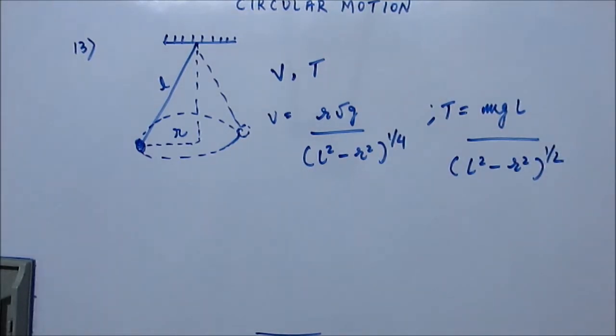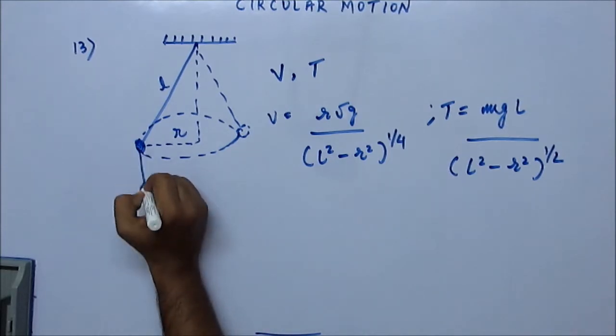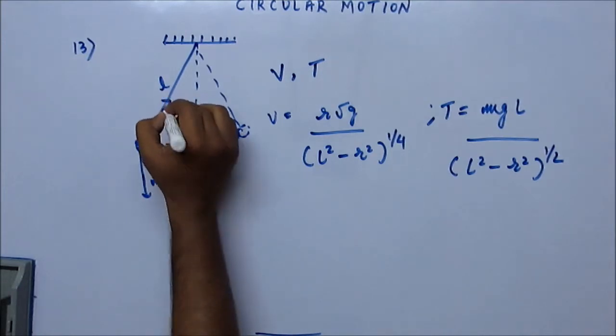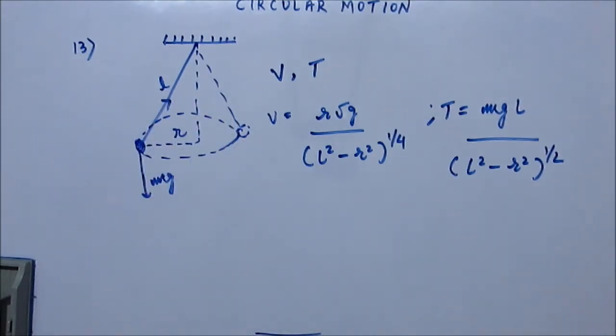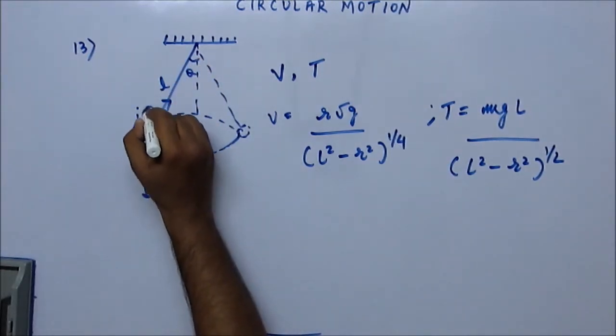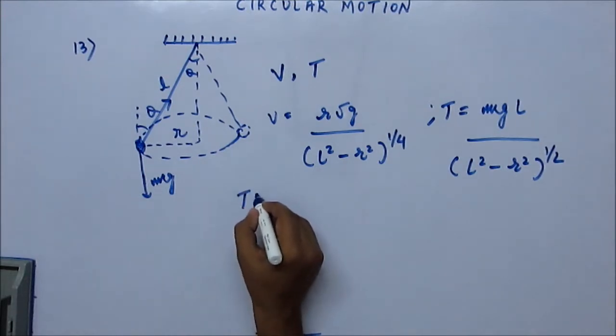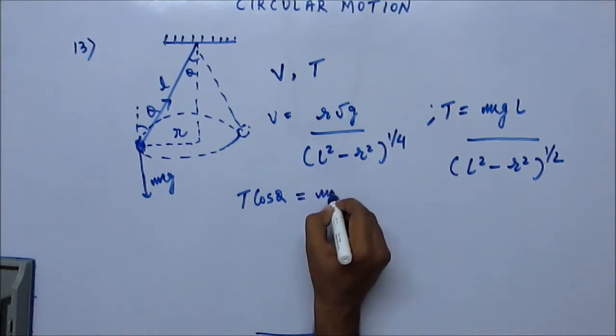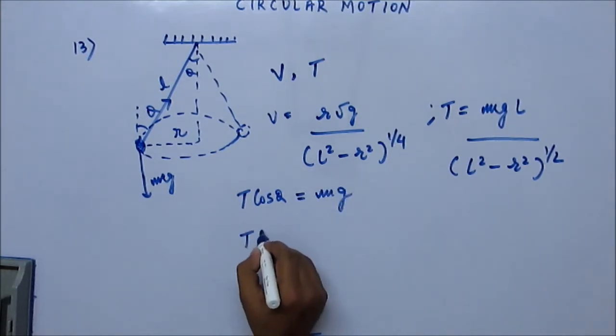Doing this is not something very great; it's easy. You just have to draw the FBD and you will know what forces are acting on the bob. It's just tension and mg. If this angle is theta, then this angle will also be theta, and you can easily see that T cos theta is the vertical force and that must balance mg.